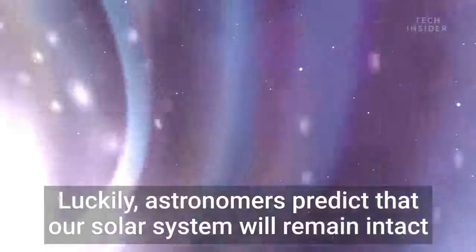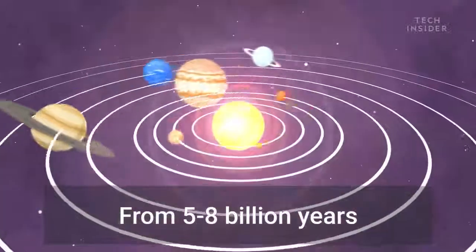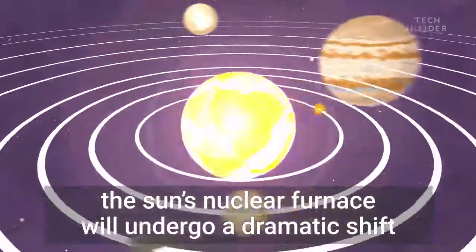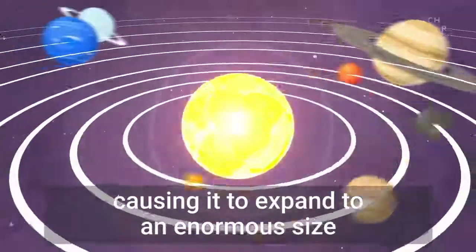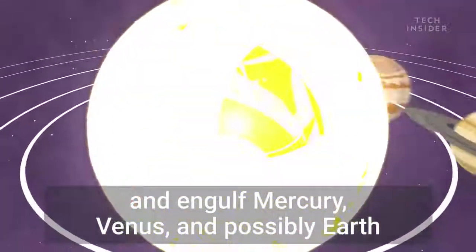Luckily, astronomers predict that our solar system will remain intact as these two titans battle it out. From five to eight billion years, the sun's nuclear furnace will undergo a dramatic shift, causing it to expand to an enormous size and engulf Mercury, Venus, and possibly Earth.